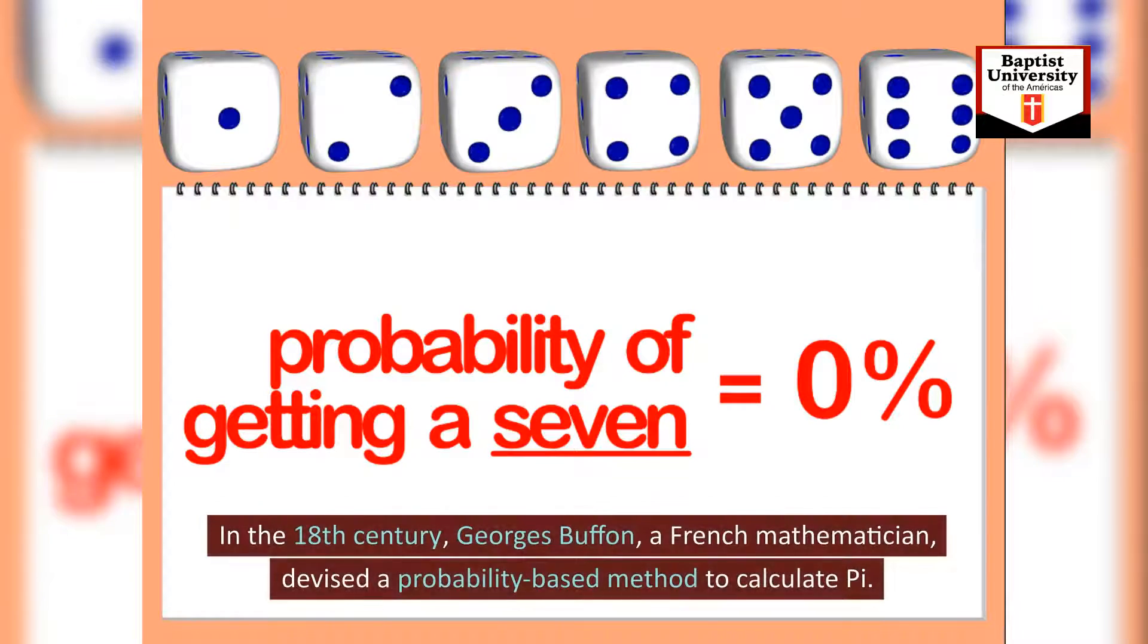In the 18th century, Georges Buffon, a French mathematician, devised a probability-based method to calculate pi.